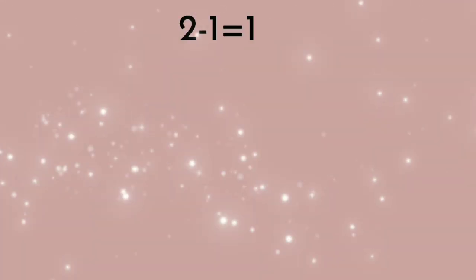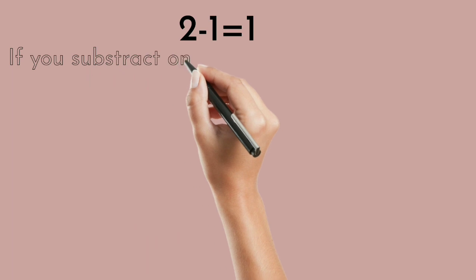Two minus one equals to one. If you subtract one from two, you will get one.